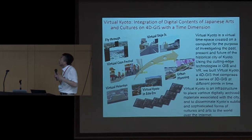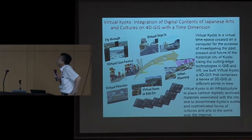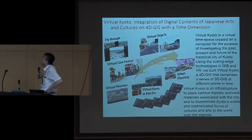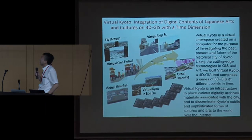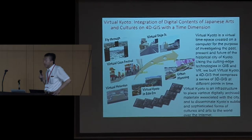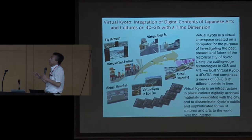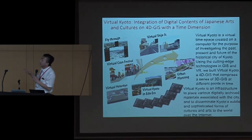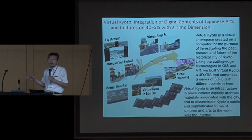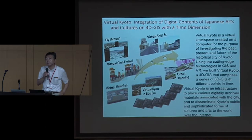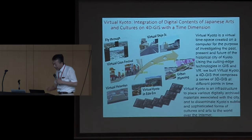Virtual Kyoto is a virtual time-space created on a computer for the purpose of investigating the past, present, and future of the historical city of Kyoto. The Virtual Kyoto system is a 3D GIS — we call it 4D GIS — including the time dimension.